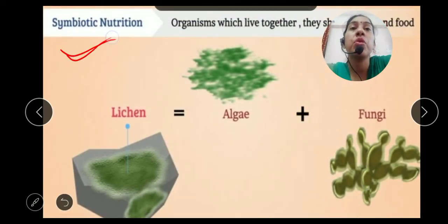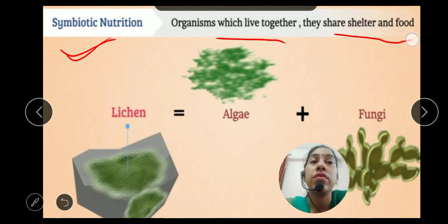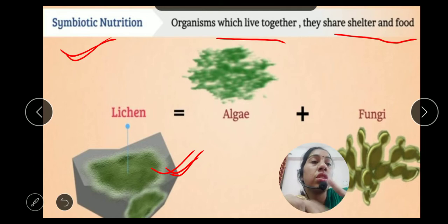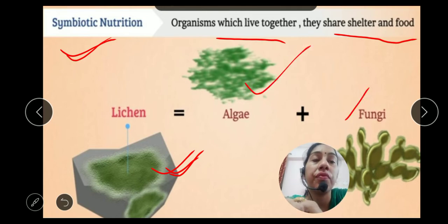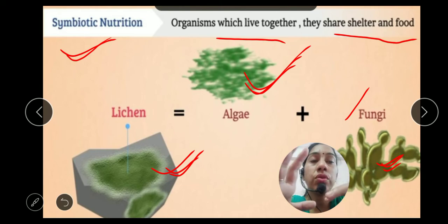Next is symbiotic nutrition. Symbiotic nutrition involves organisms which live together and share shelter and food. The best example of symbiotic nutrition is lichen. Lichen is the association of two organisms — first is algae and second is fungi. Algae is green in color, but fungi is not green in color.